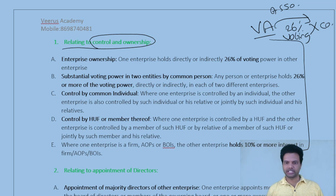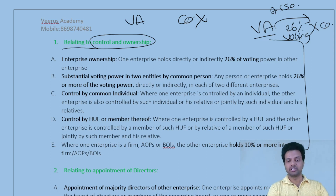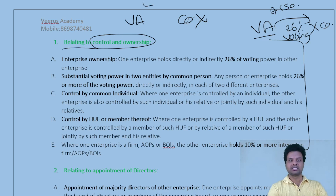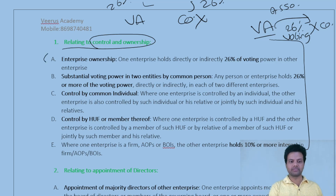Point B: substantial voting power in two entities by a common person. Virus Academy and Company X don't have any direct stake in each other, but Ratan Tata has invested 26% stake in Virus Academy and 26% in Company X. Even though they have no direct association, both are said to be associated enterprises because one common person holds 26% or more voting power in both companies.